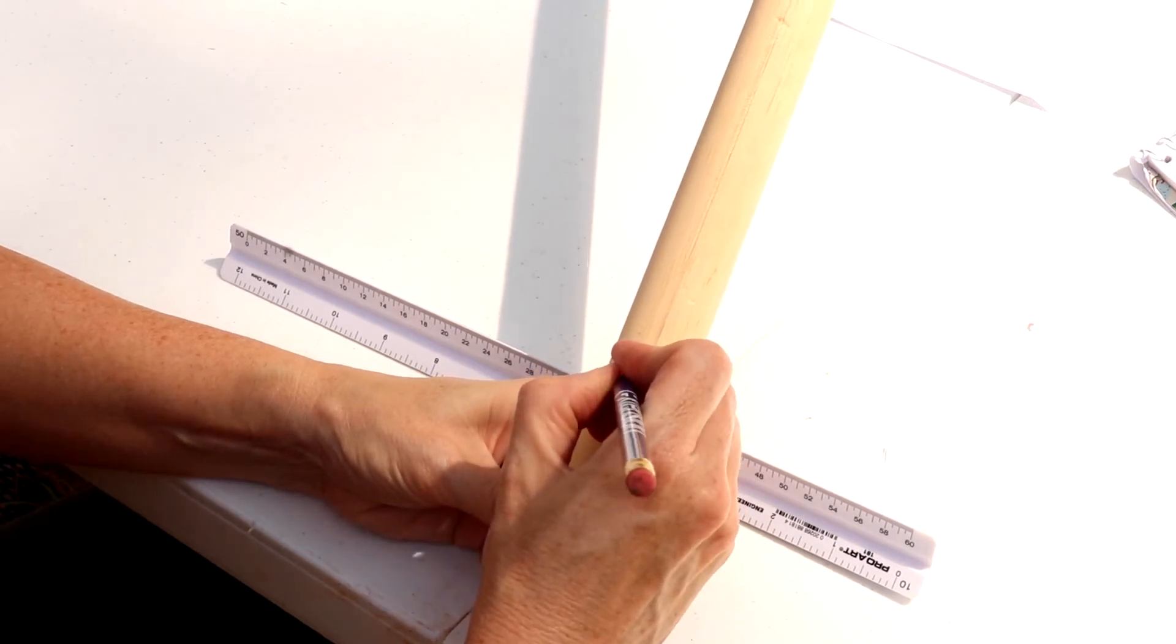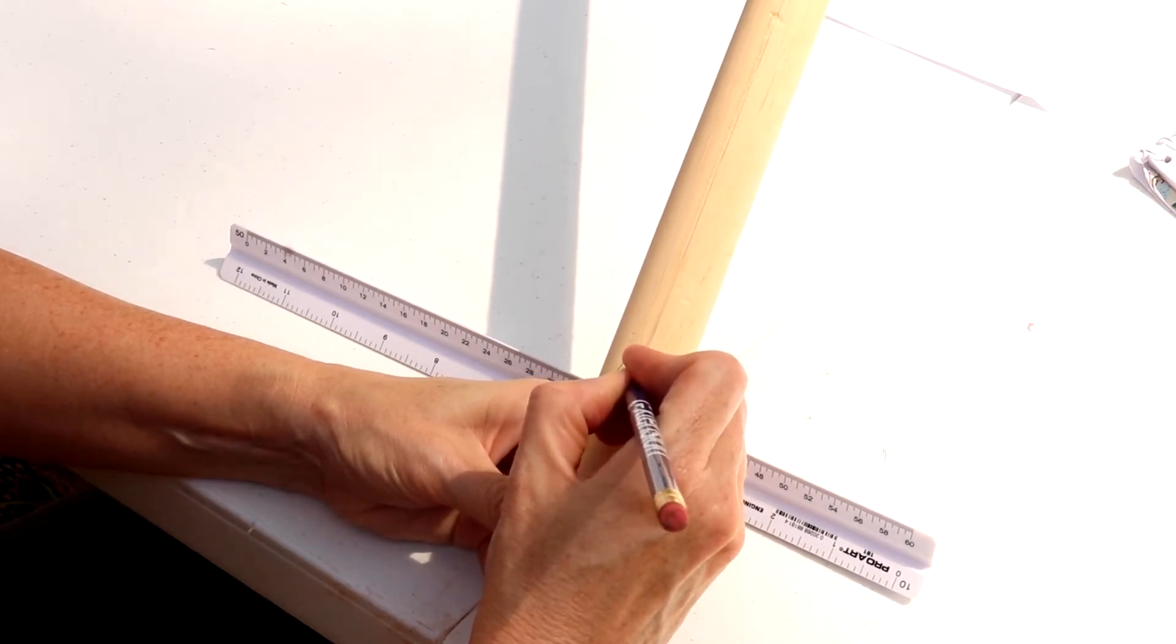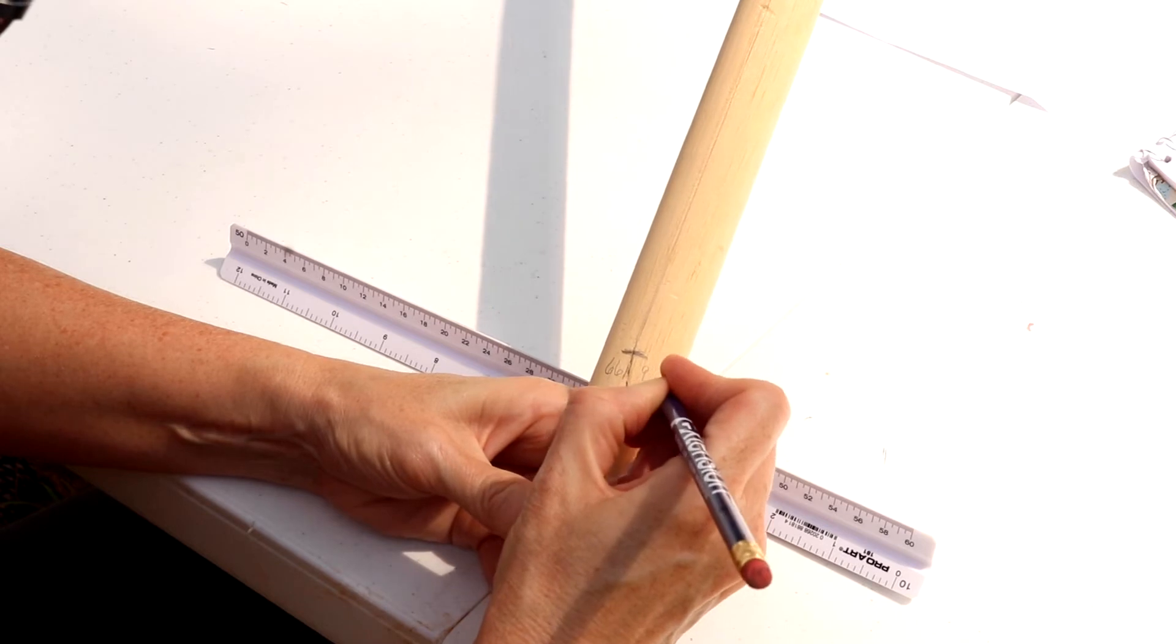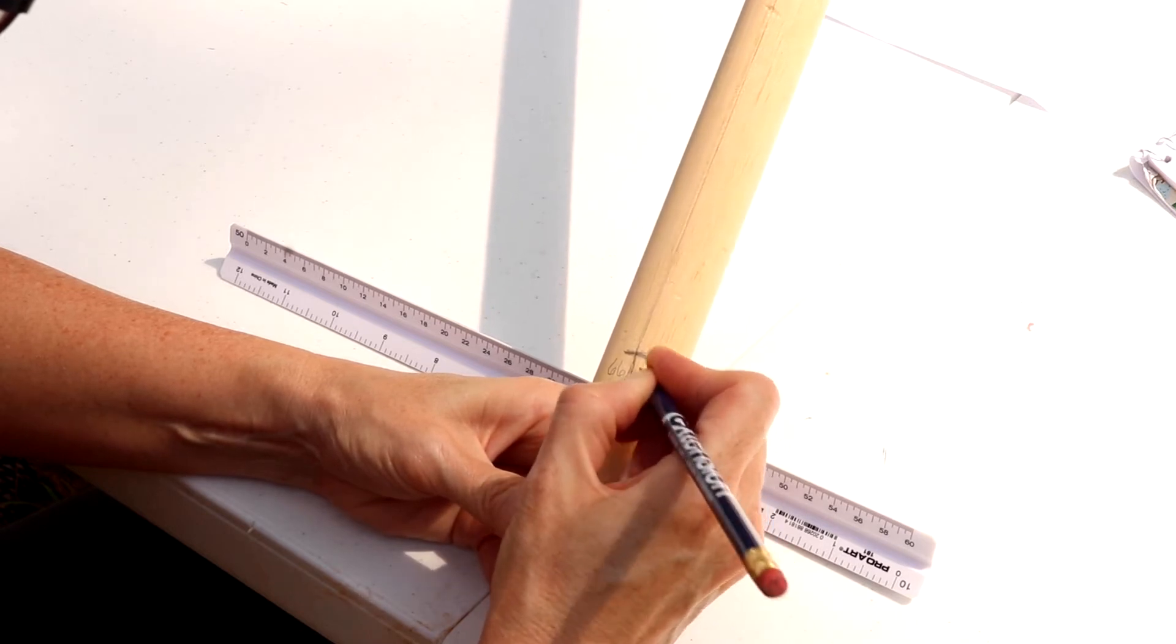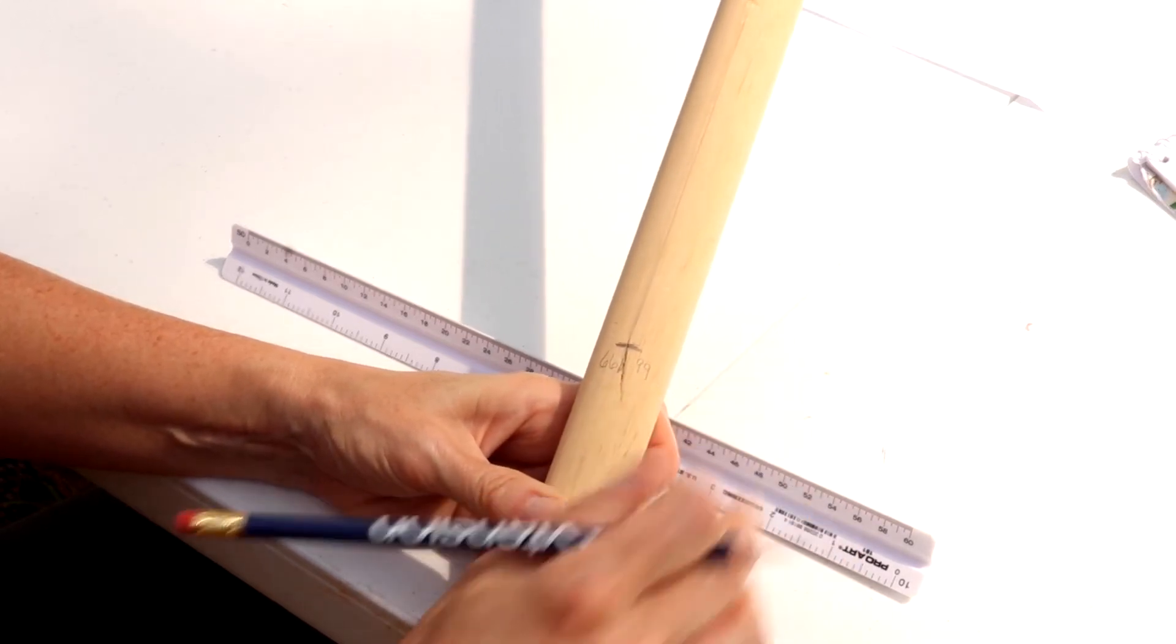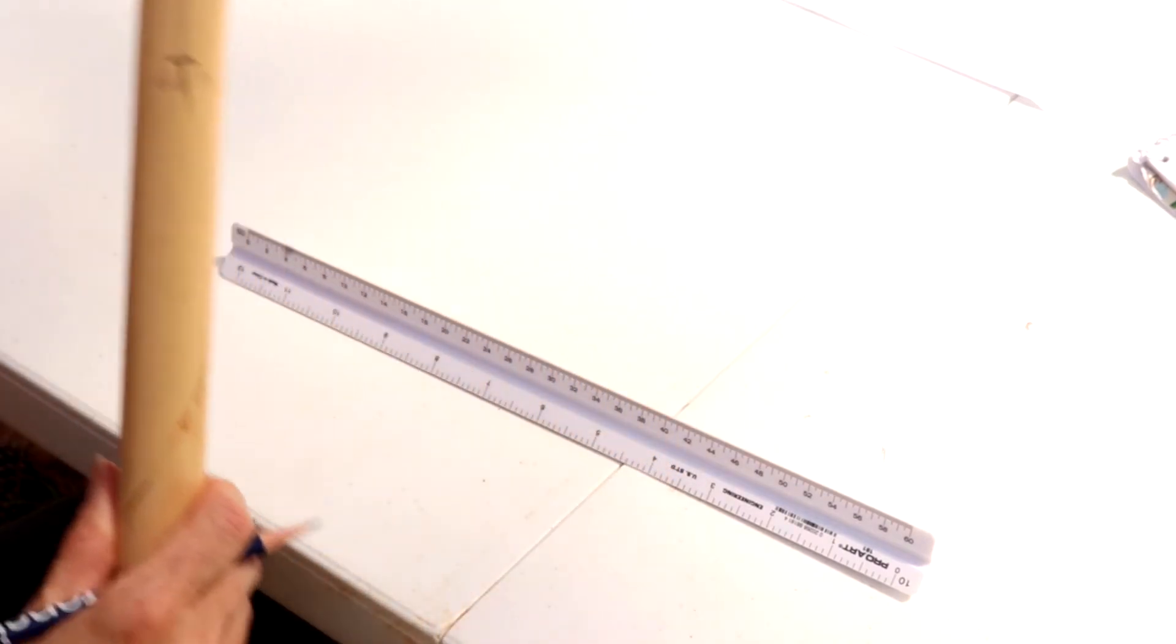Once you have your calculations complete, you may start crafting your merit hypsometer. Find a starting point at least 6 to 10 inches from the top of the stick and mark it with a pencil line. Starting the markings here will keep your hand from rubbing them off.